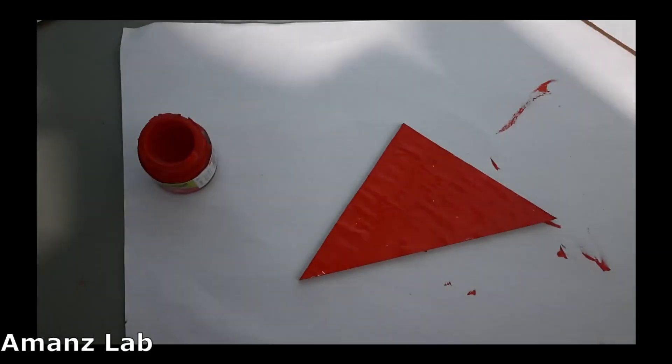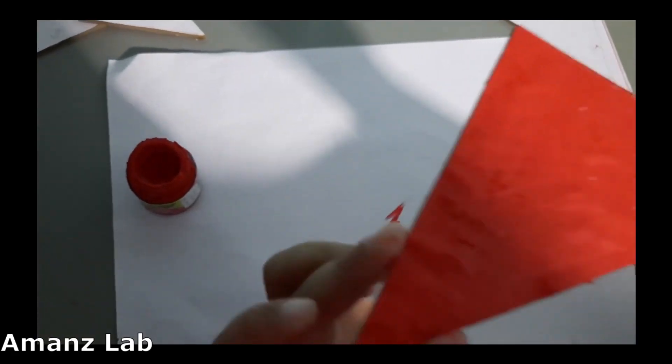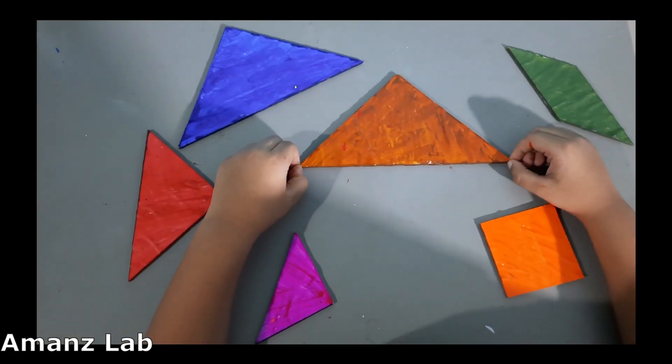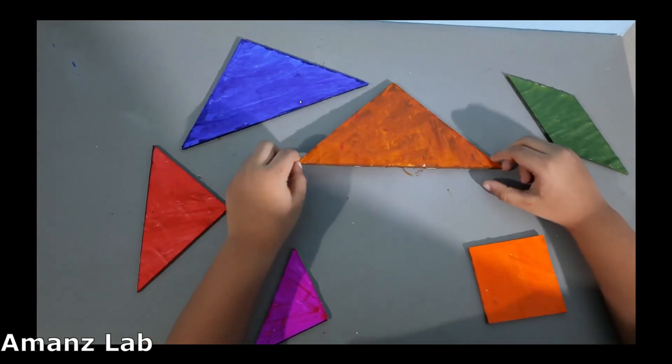Now I have painted one side, let this dry, let us paint the other shapes. Now this is dry, I will show you how to make different things using this.